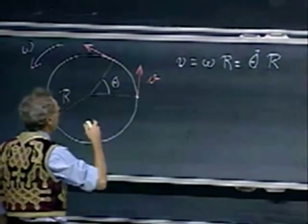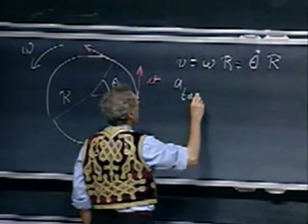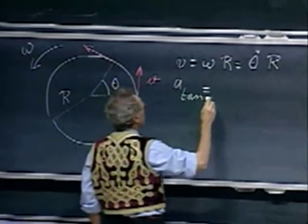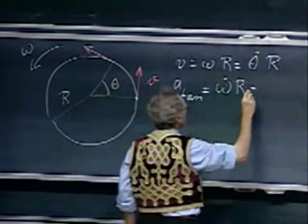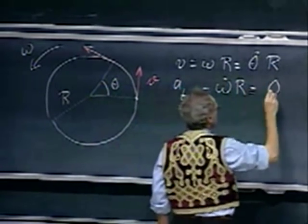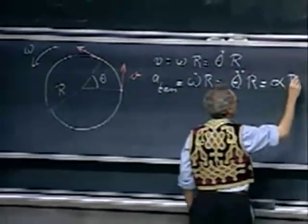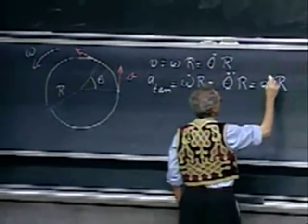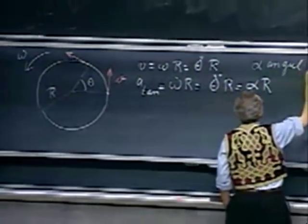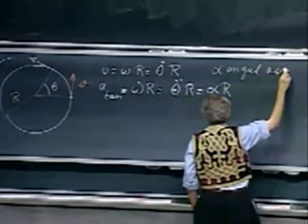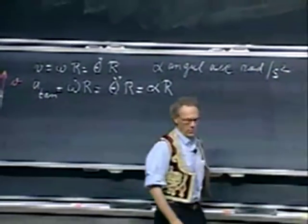I can take the first derivative of this. Then I get a tangential acceleration, which would be omega-dot times r, which is theta-double-dot times r. We call theta-double-dot alpha, and alpha is the angular acceleration, in radians per second squared.